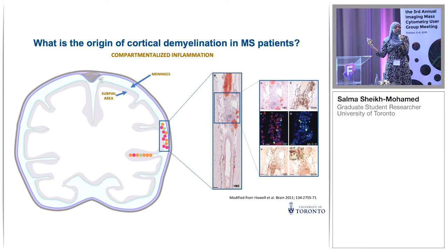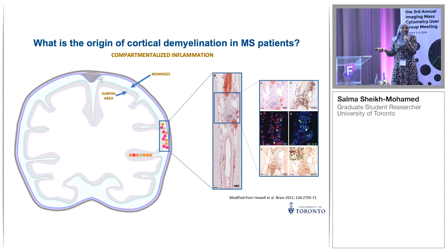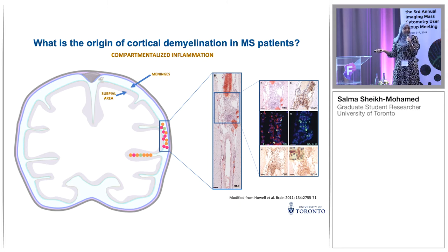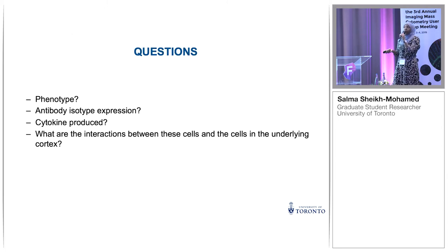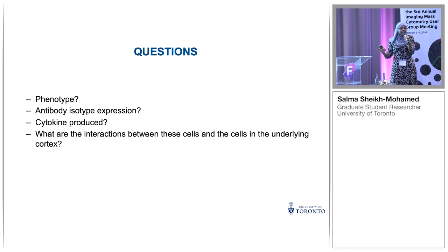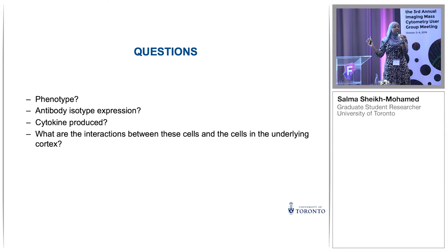This image is from one of the papers that was able to look at this most closely — and as you can see, it really doesn't provide a lot of detail. They see the presence of these cells, but that doesn't tell us what the cells are doing. This is where IMC becomes really important to us, because it's not enough to know that the cells are there. We need to know their phenotype, which antibody isotypes they're expressing, which cytokines they produce, and most importantly, how their presence and function relates to what's happening in the grey matter.